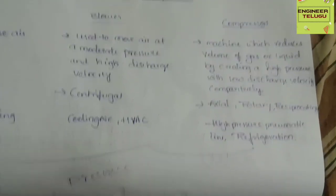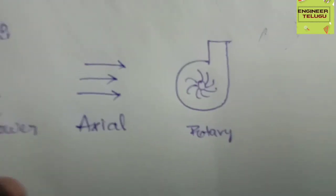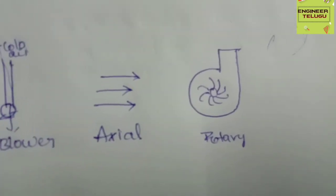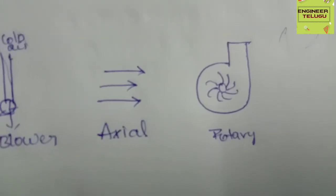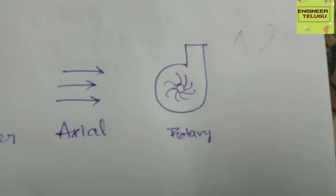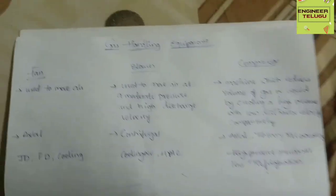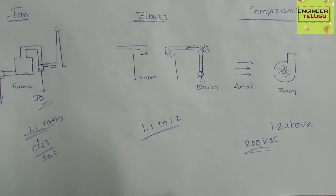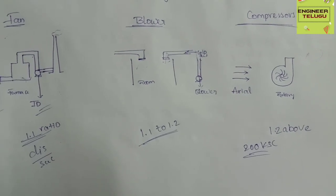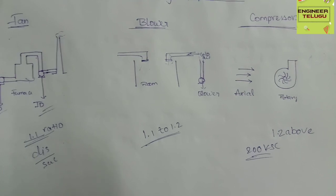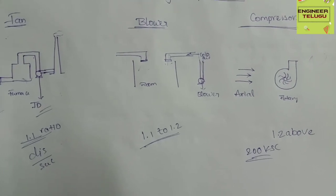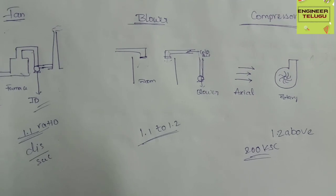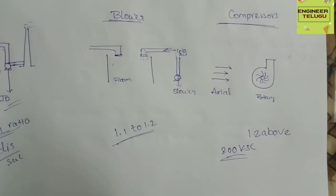We can use a centrifugal type blower, and for fans we can use axial fans. For compressors, axial, rotary and reciprocating — also called positive displacement compressors — are available. The main differentiator is the discharge-to-suction pressure ratio: fan is 1.1 times boost, blower is 1.1 to 1.2 with high velocity, and compressor is above 1.2 boost.